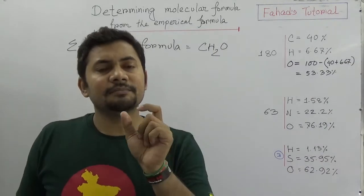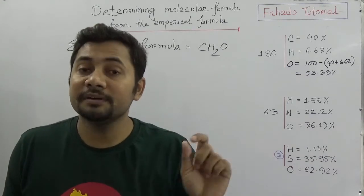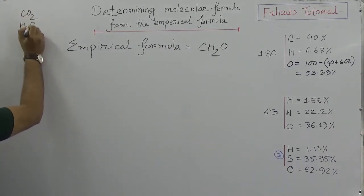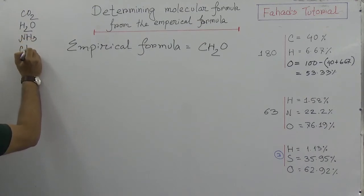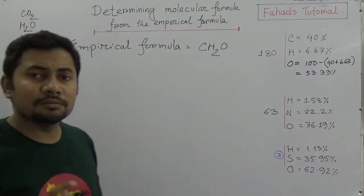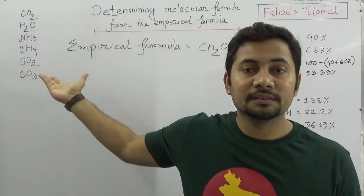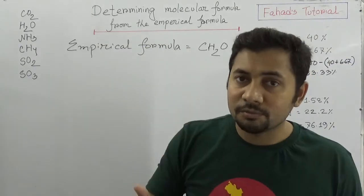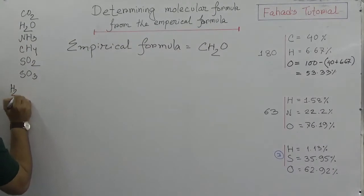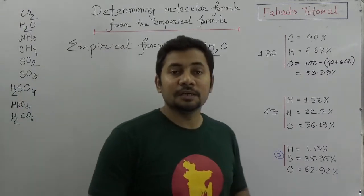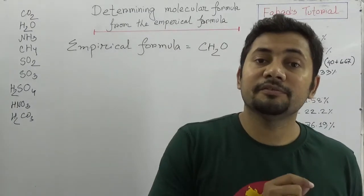You know that in some compounds the molecular formula and the empirical formula are the same. Like CO2, H2O, NH3, CH4, SO2, SO3 — these are known compounds where the ratios of the number of atoms of the elements are already in simplest form. And that is why even H2SO4, HNO3, and H2CO3 — there are a number of compounds where the empirical formula and the molecular formula will be the same.